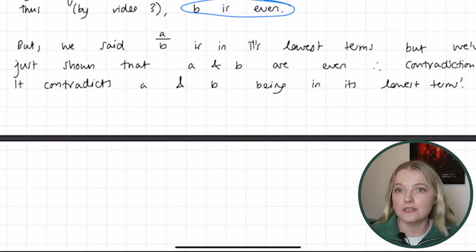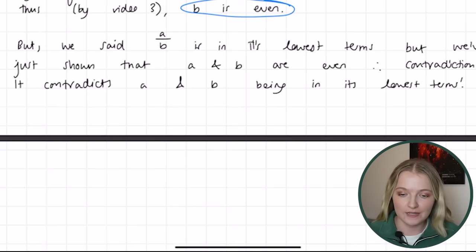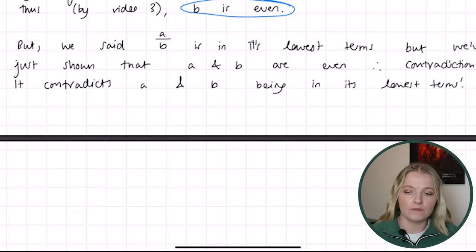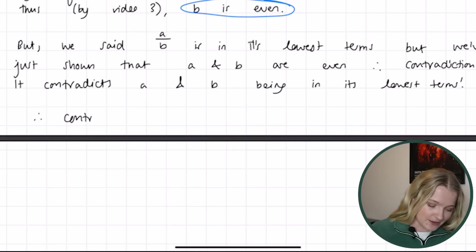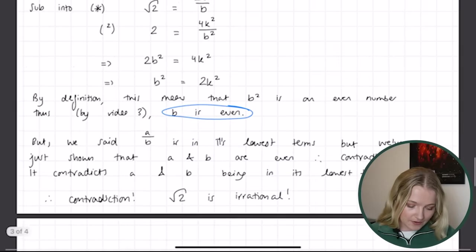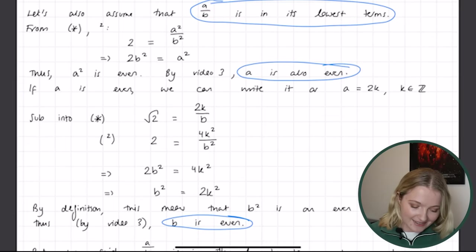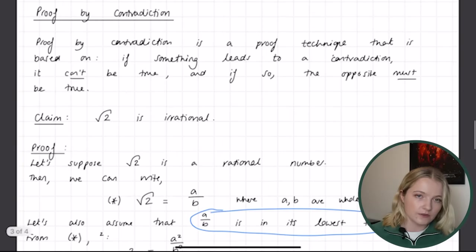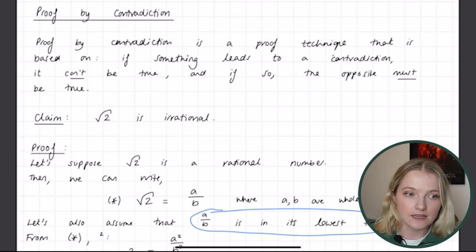This contradiction has come from the fact that we assumed the square root of 2 is rational. Because we now have a contradiction, we can say: therefore, by proof by contradiction, the square root of 2 is not rational — it is irrational. Root 2 is irrational. Like I mentioned, there's a small piece of proof still needed, which I'll cover in the following video, but I really love this method of proving things.